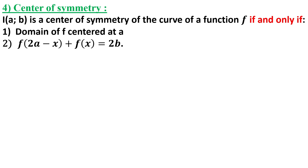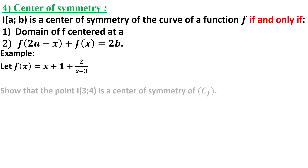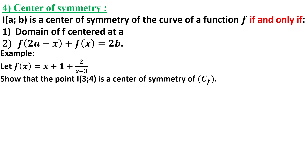We also need to prove that f(2a − x) + f(x) = 2b. For the following example, we need to prove that the point I with coordinates (3, 4) is the center of symmetry of the curve of f(x) = (x + 1) + 2/(x − 3). We simply need to prove these two conditions, as shown in the solution.